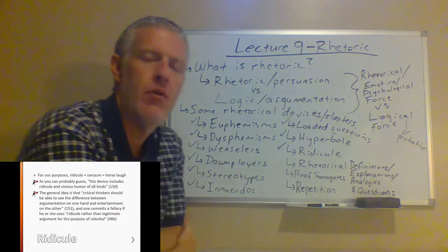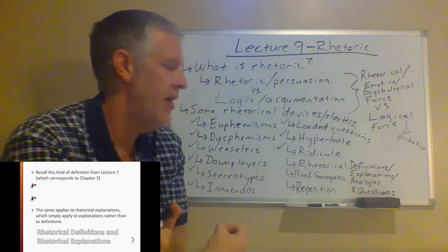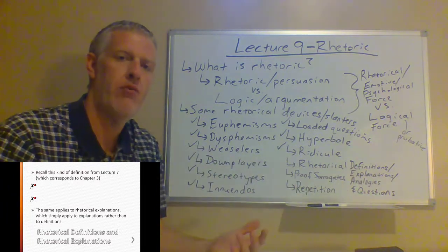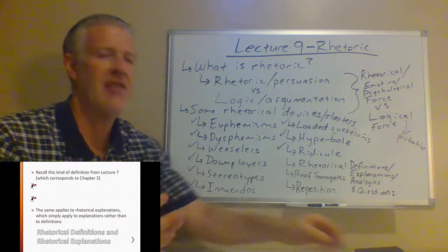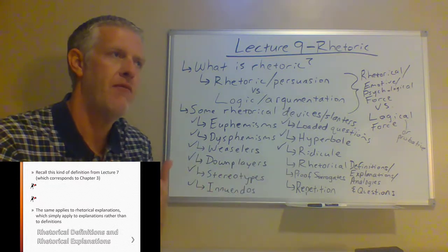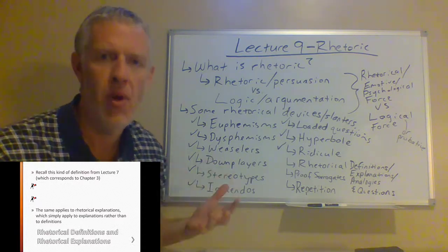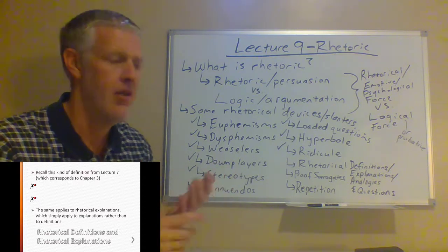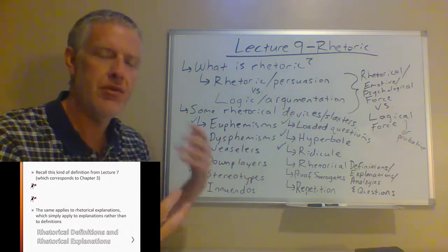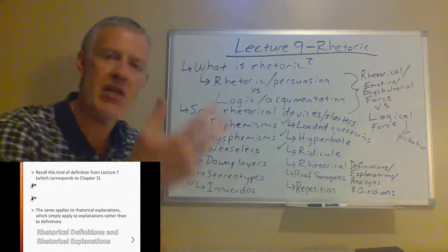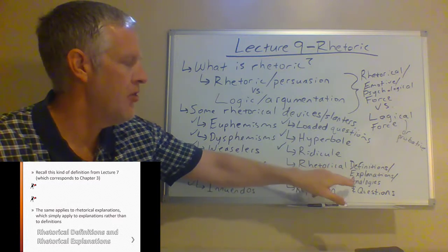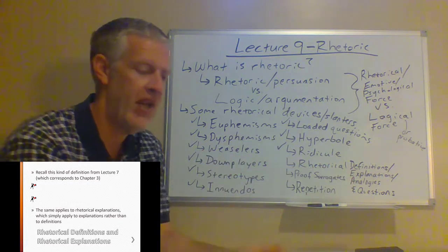Next we have rhetorical definitions, explanations, and analogies — and I'd add rhetorical questions too. When someone asks a rhetorical question, they don't want an actual response; they're using it to conjure up certain feelings or emotions to make a point and persuade, not to genuinely communicate. It's a persuasive technique, not an actual attempt to get an answer. Just like rhetorical definitions and analogies, rhetorical questions work the same way.